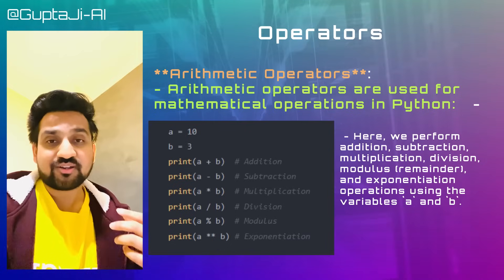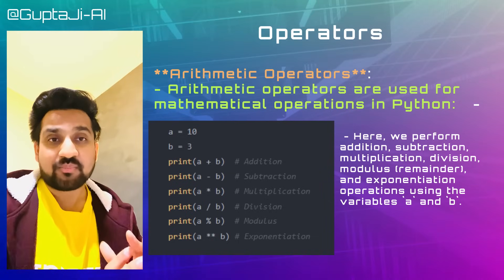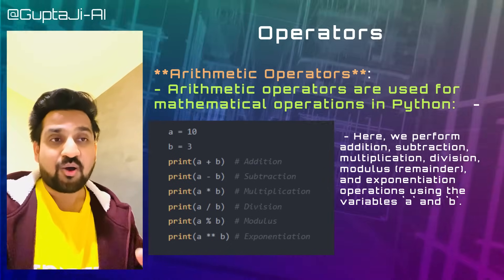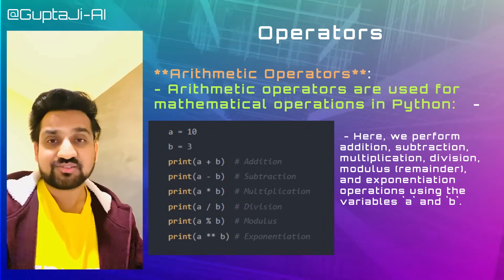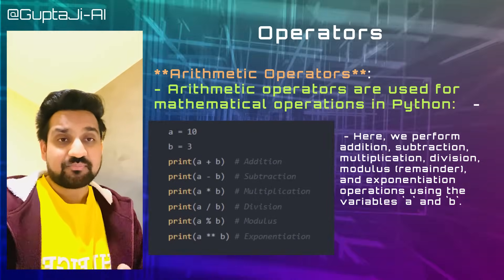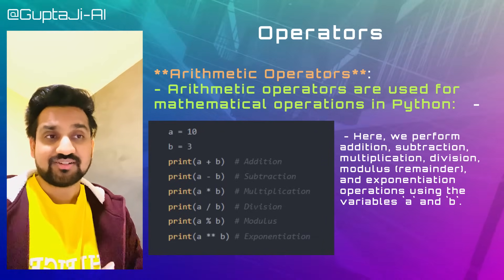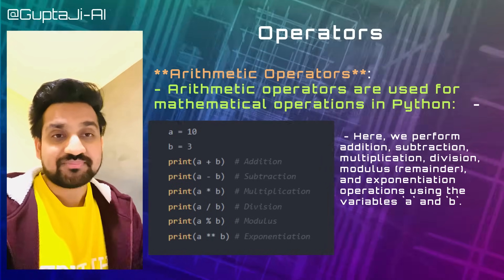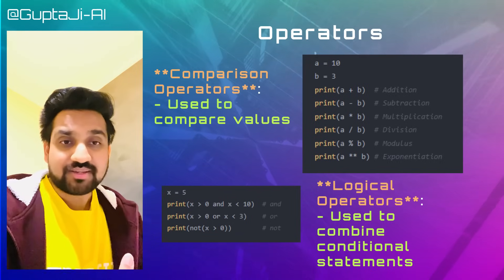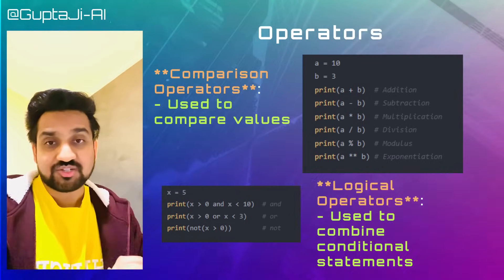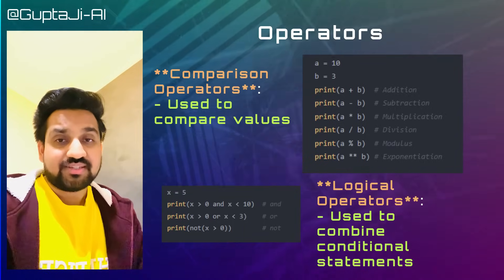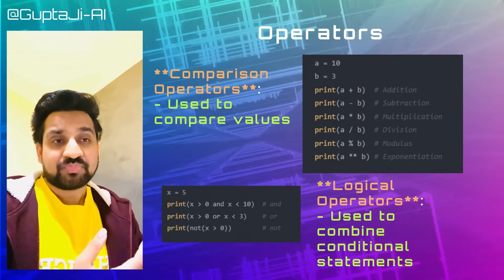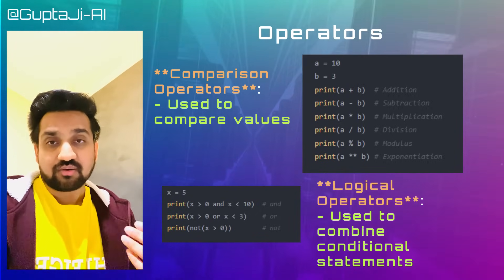As we progress further, we encounter a crucial aspect of programming: operators. From arithmetic operators for mathematical computations, to comparison operators for value comparisons, and logical operators for combining conditional statements, operators empower us to perform diverse operations. As shown in this example, we perform addition, subtraction, multiplication, division, modulus, and exponentiation using variables a and b. Comparison operators help us compare the values of x and y to determine their relationships.